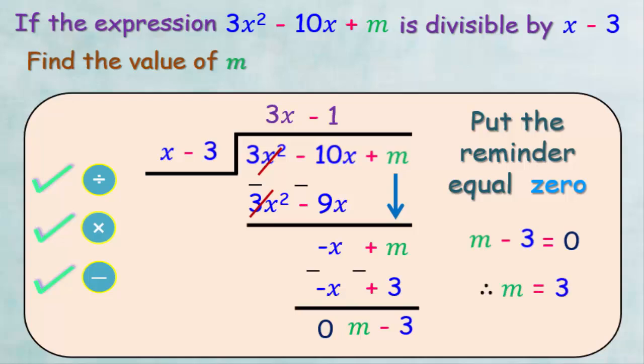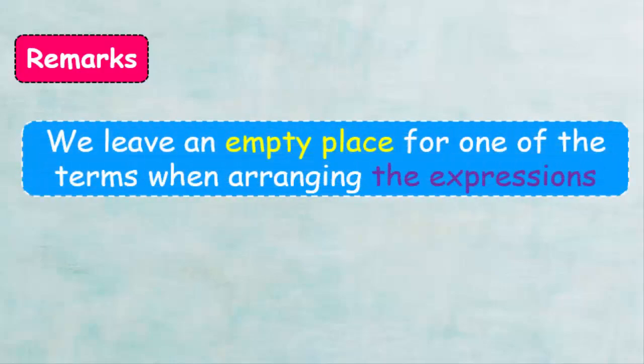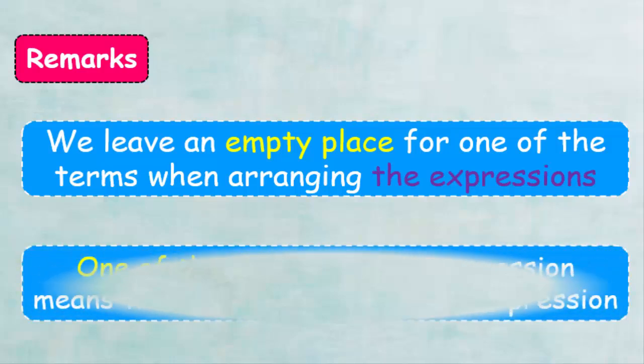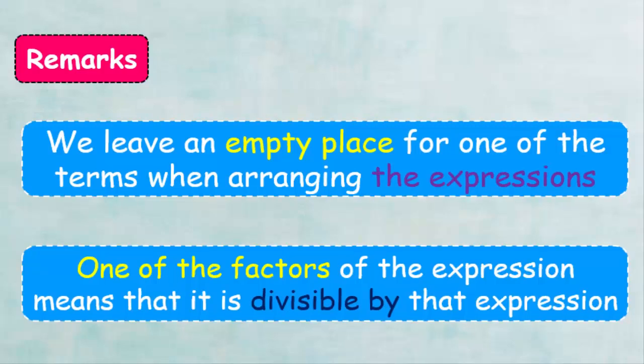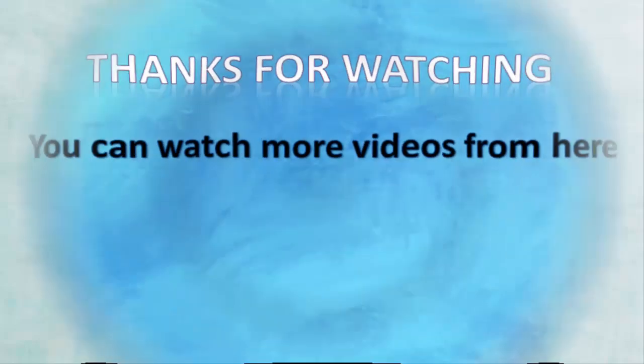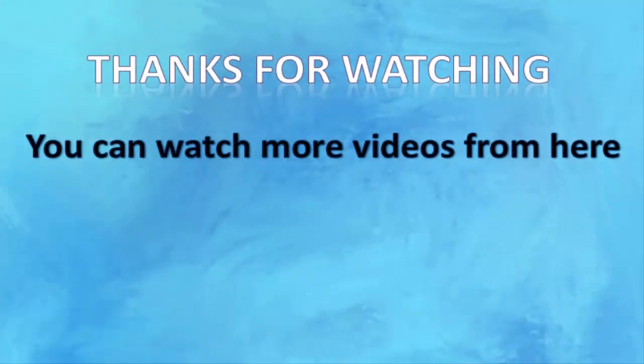Finally, note that when arranging an expression and one of the terms is missing, you should leave an empty place for it. If an expression is fully divisible by another expression, the remainder is 0. I hope that explanation was helpful — thanks for listening and see you next time.